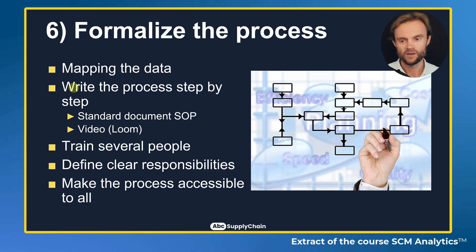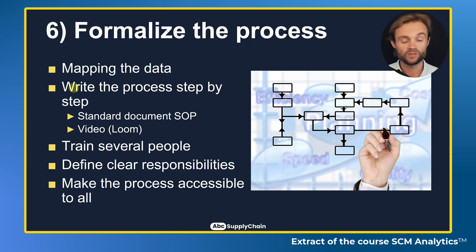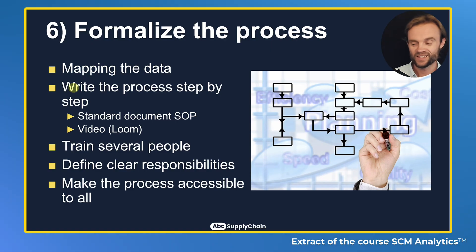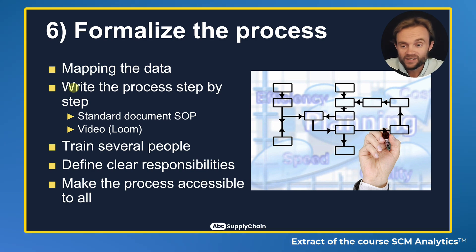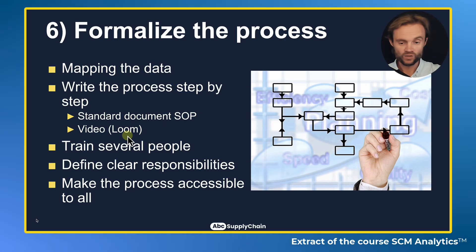The sixth step is to formalize the process. Map the data — document where it comes from — and make everything accessible to everyone. Train different people and define clear responsibilities: who is responsible for updating and refreshing the data. In my team, two people were always responsible for updating the report so if one was on holiday the other covered. Many companies reinvent the wheel because there's no process. I also recommend recording short videos using a tool like Loom to show exactly where to click.